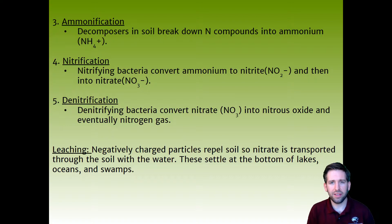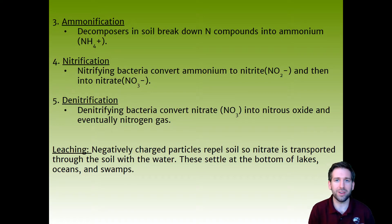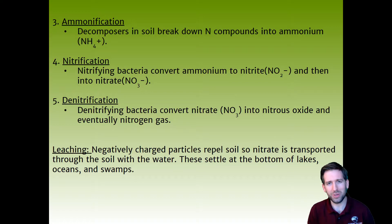The last step is denitrification: denitrifying bacteria convert nitrate (NO3-) — the form usable by plants — into nitrous oxide and eventually nitrogen gas (N2), which returns to the atmosphere. That covers all the steps in the nitrogen cycle. It can be confusing with different bacteria converting from one form to another, through organisms dying and breaking down, so drawing it out and studying each step carefully is important.